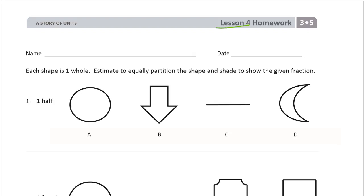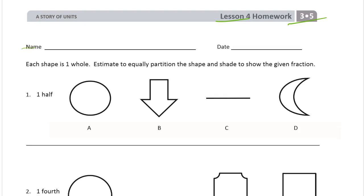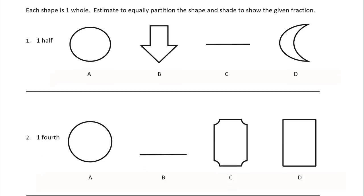Welcome to the homework for lesson four. It's module five of grade three. Please write your name first. Each shape is one whole. Estimate to equally partition the shape and shade to show the given fraction.